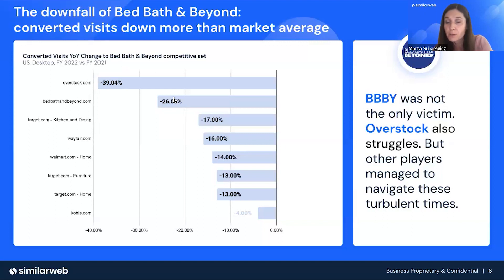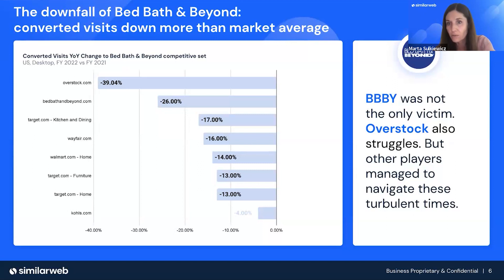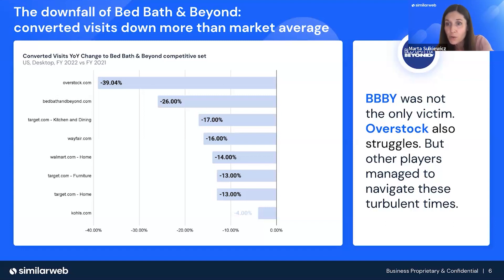When we look at the particular players in the category, we see that not everybody had the same drop in converted visits. Bed Bath & Beyond had minus 26%, which was significantly worse than the industry average of minus 11%. There were players doing even worse, like Overstock.com. However, there were players like Kohl's, Target, and Walmart — taking only the relevant furniture and home decoration segment — that noticed only 13 to 16% decrease in converted visits. So we could clearly see that something was definitely going wrong with Bed Bath & Beyond.